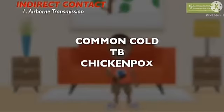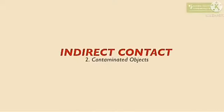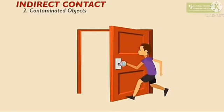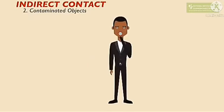Common cold, TB (tuberculosis), chickenpox, and mumps are examples of diseases spread by indirect contact through the air. Contaminated objects can also affect an unaffected person.